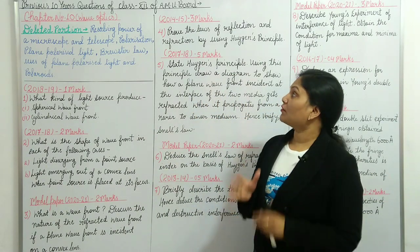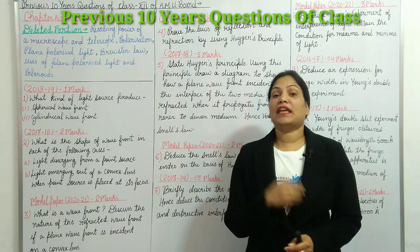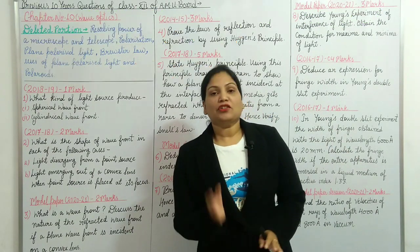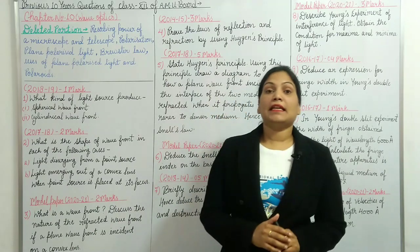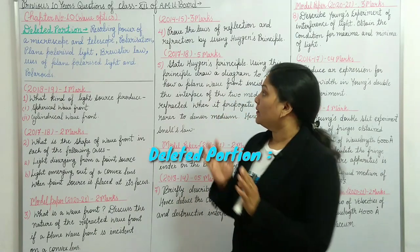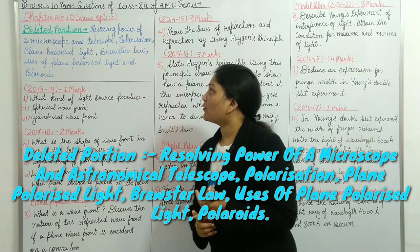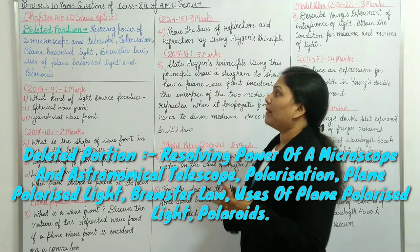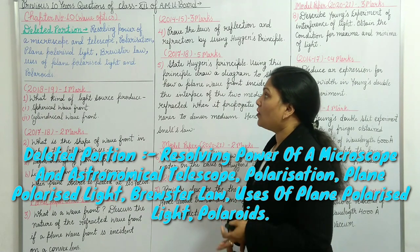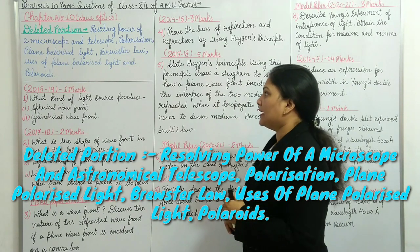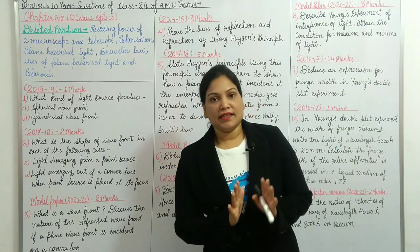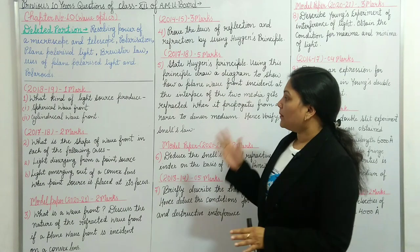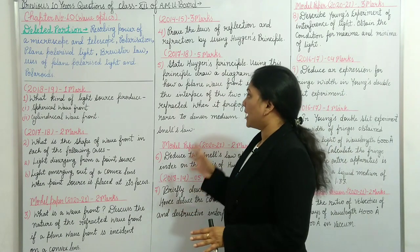Today I will give you 10 years of previous questions for Class 12th AMU Board, Chapter 10: Wave Optics. First, let's see what the deleted portions are. The deleted portions include: resolving power of a microscope and telescope, polarization, plane polarized light, Brewster's law, uses of plane polarized light, and polaroids. All these are deleted and will not come in the chapter.